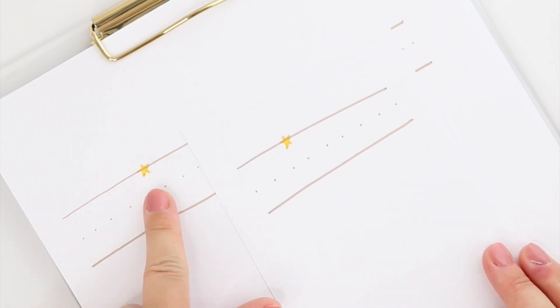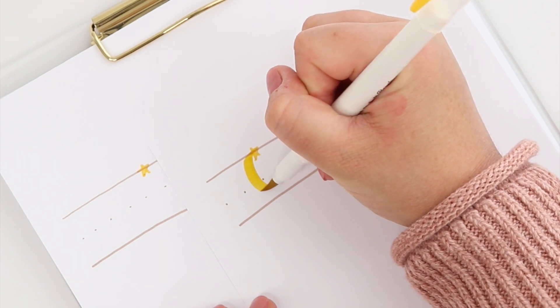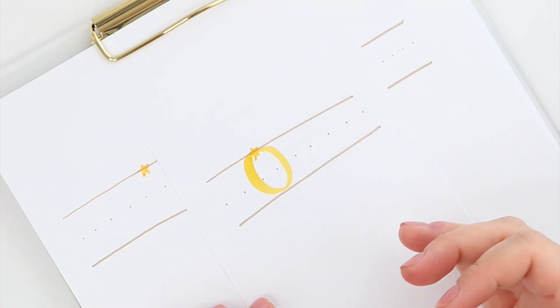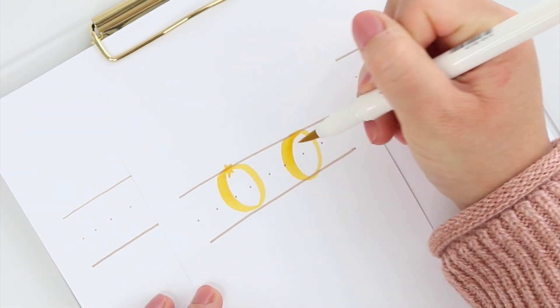But what happens when we use a brush pen? Well in hand lettering our down strokes typically get thicker and our up strokes typically get thinner. But the tops and the bottoms of our ovals can be the places where our strokes kind of start to taper off from one to the other.